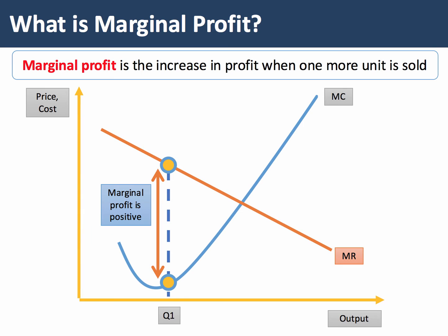In that case, the marginal profit will be positive. Let's say you're getting £20 of extra revenue for that unit, and it's only costing you £2 — you'll be making a marginal profit of £18.